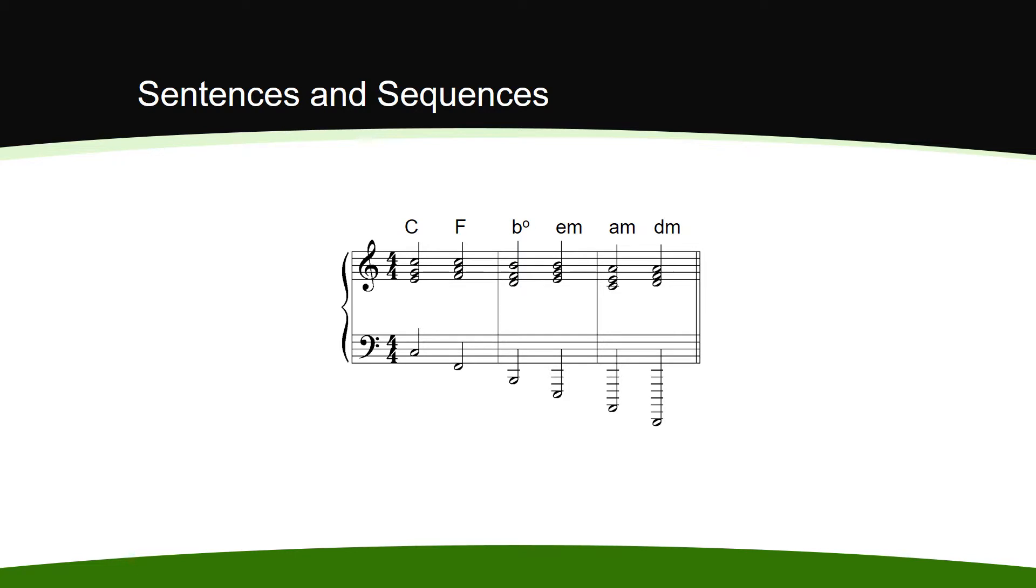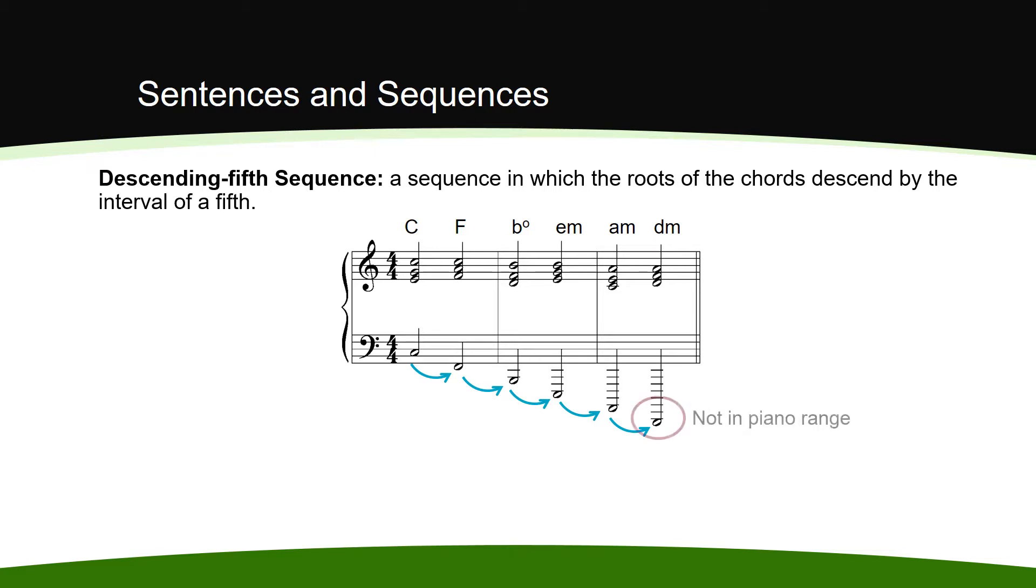In a descending fifth sequence, the root of the chords descend by the interval of a fifth. While it's named after the descending interval of its root, the roots on the staff will not physically always descend. If they did, we'd run out of room on the staff or be out of an instrument's or vocalist's range pretty quickly. To keep this sequence in a comfortable range, the roots will actually descend by fifth and then ascend by fourth, which is just an inverted fifth.